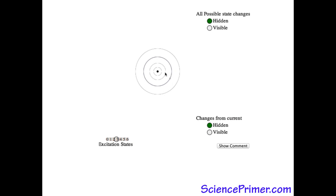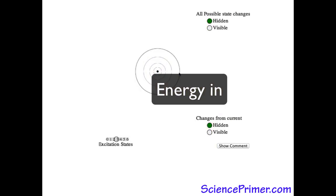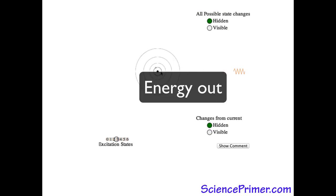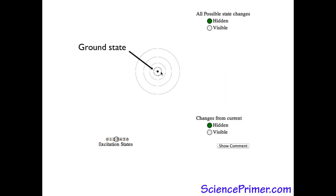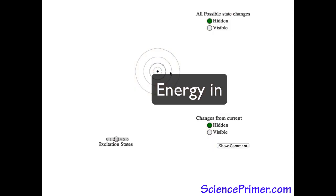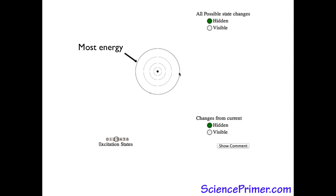Electrons can move between orbitals by releasing or absorbing energy. The lowest energy level an electron can occupy is called the ground state. The higher orbitals represent higher excitation states. The higher the excitation state, the more energy the electron contains.